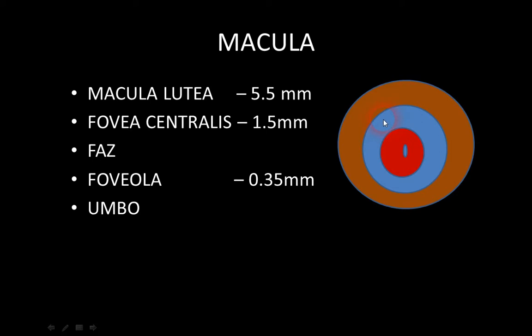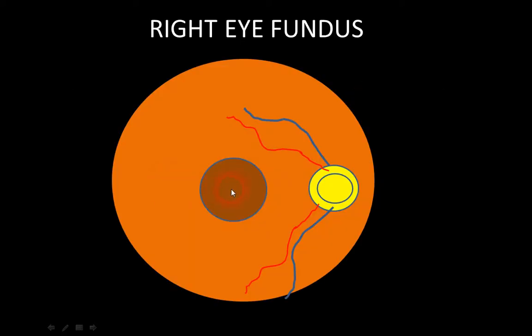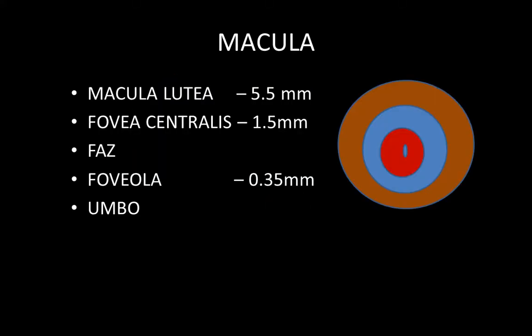Key MCQ points: the various diameters of the macula are infrequently asked. The distance between the foveola and the temporal margin of the optic disc is two disc diameters. Regarding the fovea centralis: number one, it is the central depressed part of the macula; number two, it has the lowest threshold for light; number three, it has the maximum sensitivity to light in the retina — it is the most sensitive part.